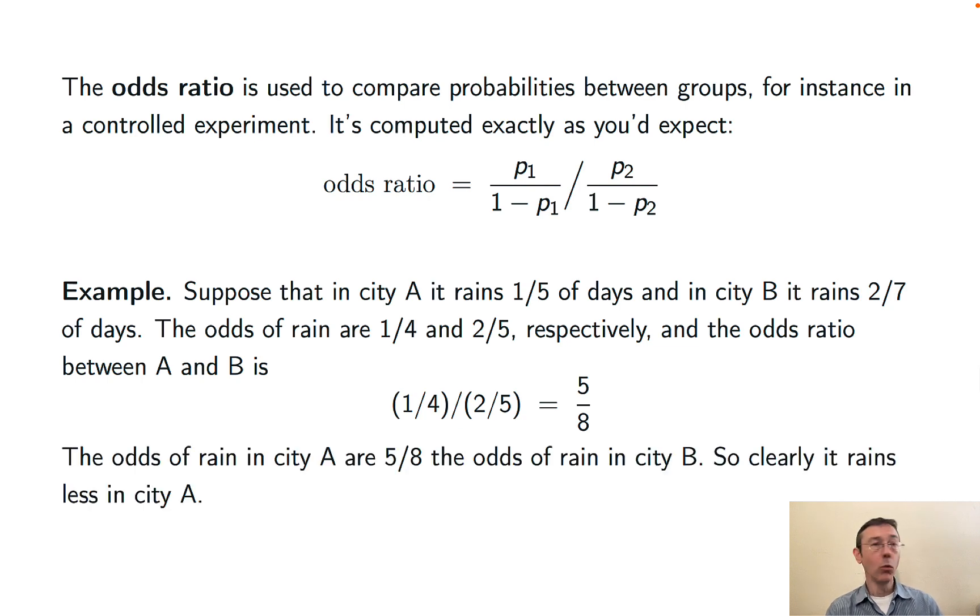Because that number is less than one, we interpret it to mean that the odds of rain in city A are less than the odds of rain in city B. It rains less in city A than city B on average.